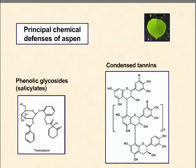Aspen produces a variety of phenylpropanoid-based or phenolic-based defense compounds, primarily in two major classes of secondary compounds. Those are the phenolic glycosides — sometimes also known as salicylates or salicinoids — an example of which is tremulacin, which is structurally similar to aspirin. And then large polyphenolic compounds that we know as condensed tannins. These are the major secondary plant compounds produced as defense agents in Aspen.